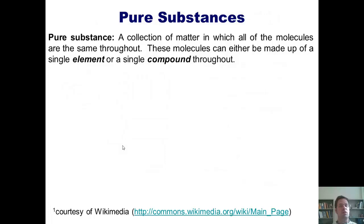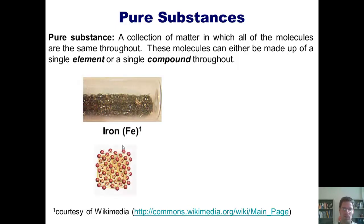And now for some more vocabulary. Strictly speaking, a pure substance is a collection of matter in which all of the molecules are the same throughout. These molecules can either be made up of a single element or a single compound throughout. Here are some examples. Once again, we've seen iron before. This is sort of a model showing very, very closely all of the individual iron atoms bonded together. You can see that if there are no other substances in there, no other molecules other than individual iron atoms bonded together, this would be considered a pure substance.